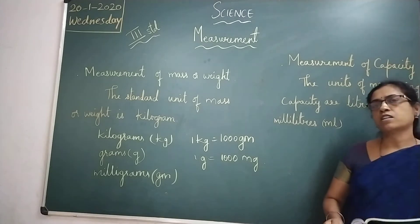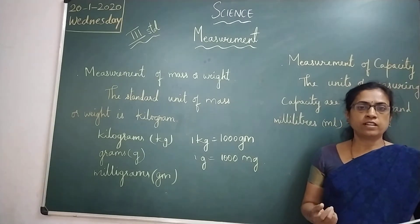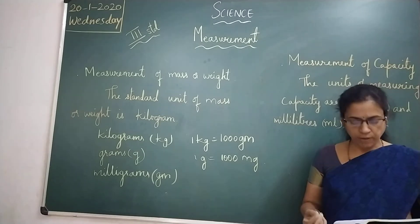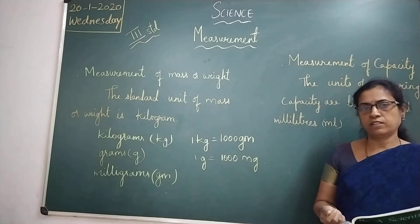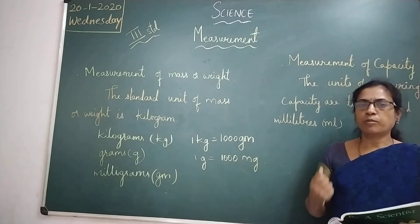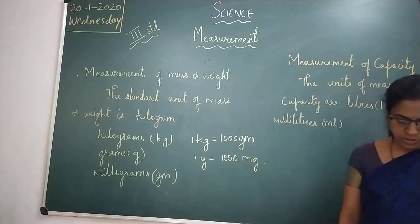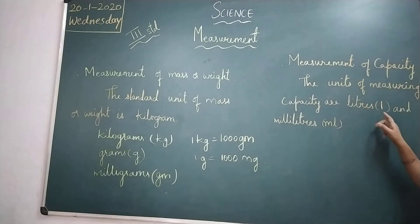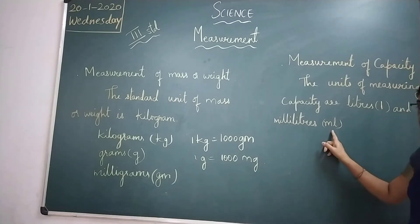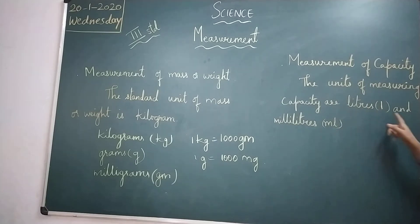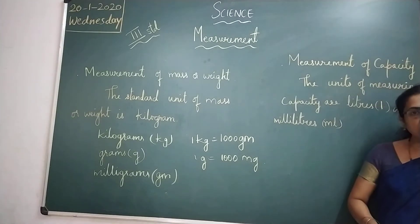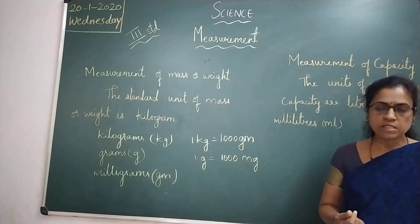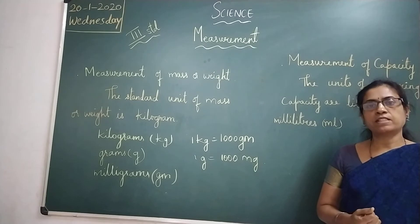For example, you can see jars, bottles, containers, or buckets available in the market. A small vessel will have less capacity compared to a big vessel. The units for measuring capacity are liters (L) and milliliters (ml). The standard unit of measuring capacity is liters. Smaller capacity is measured in milliliters and larger capacity is measured in liters.